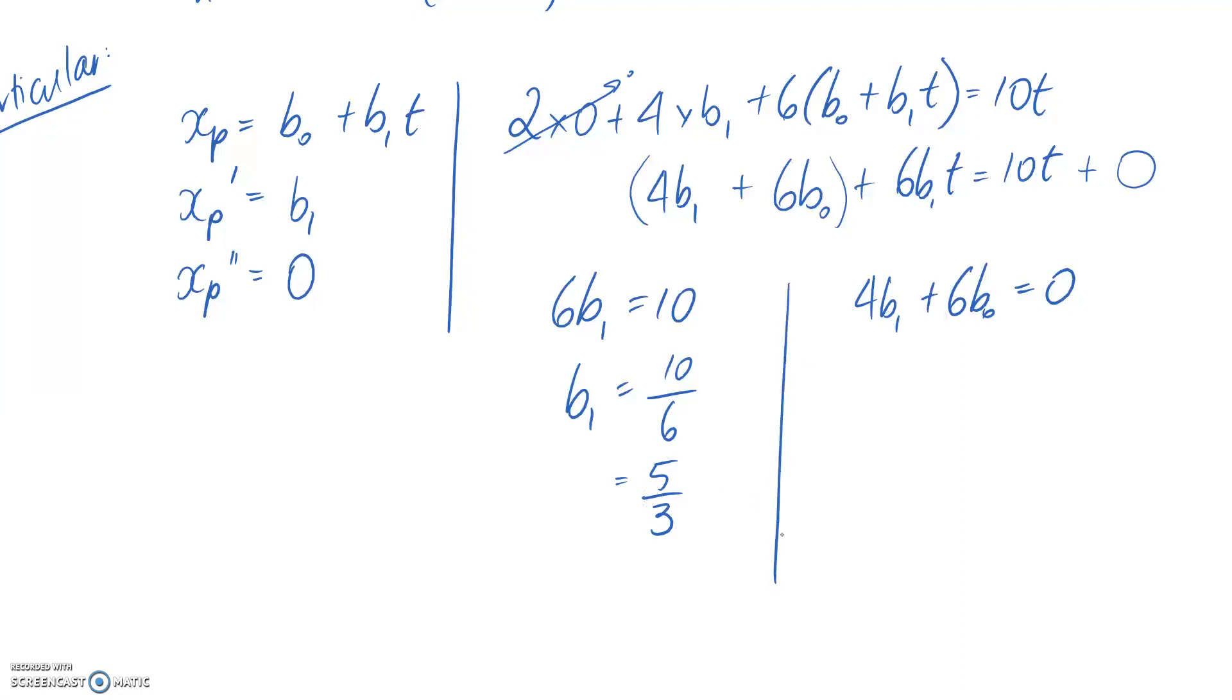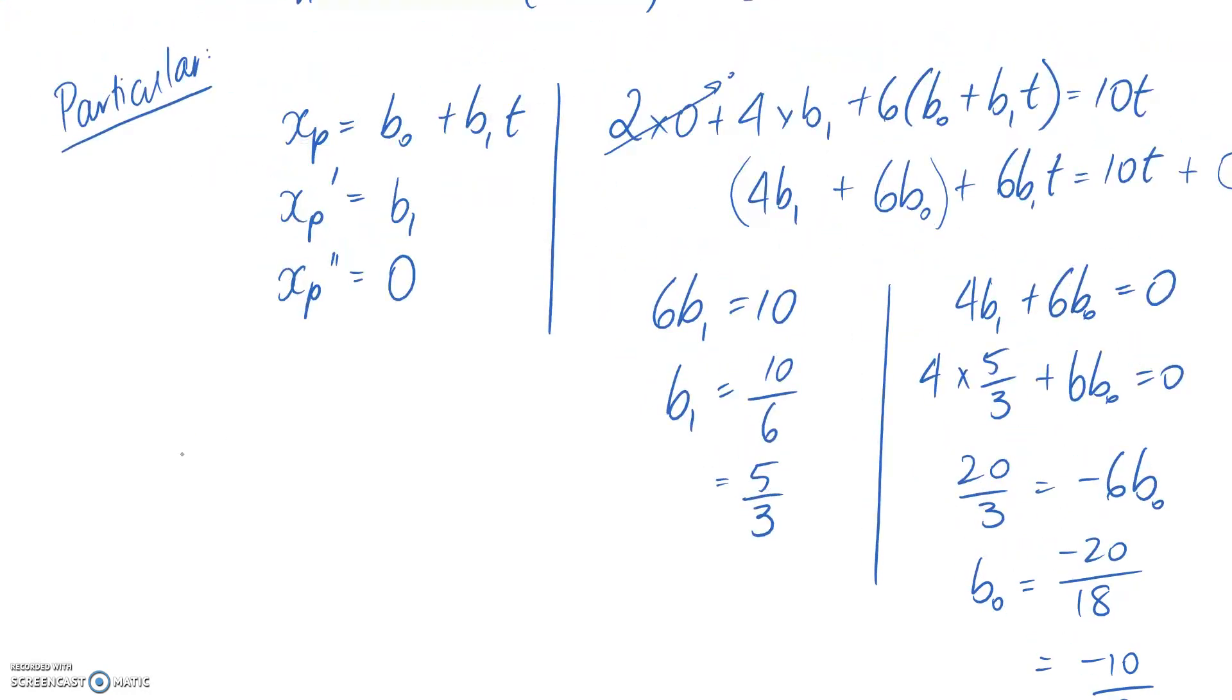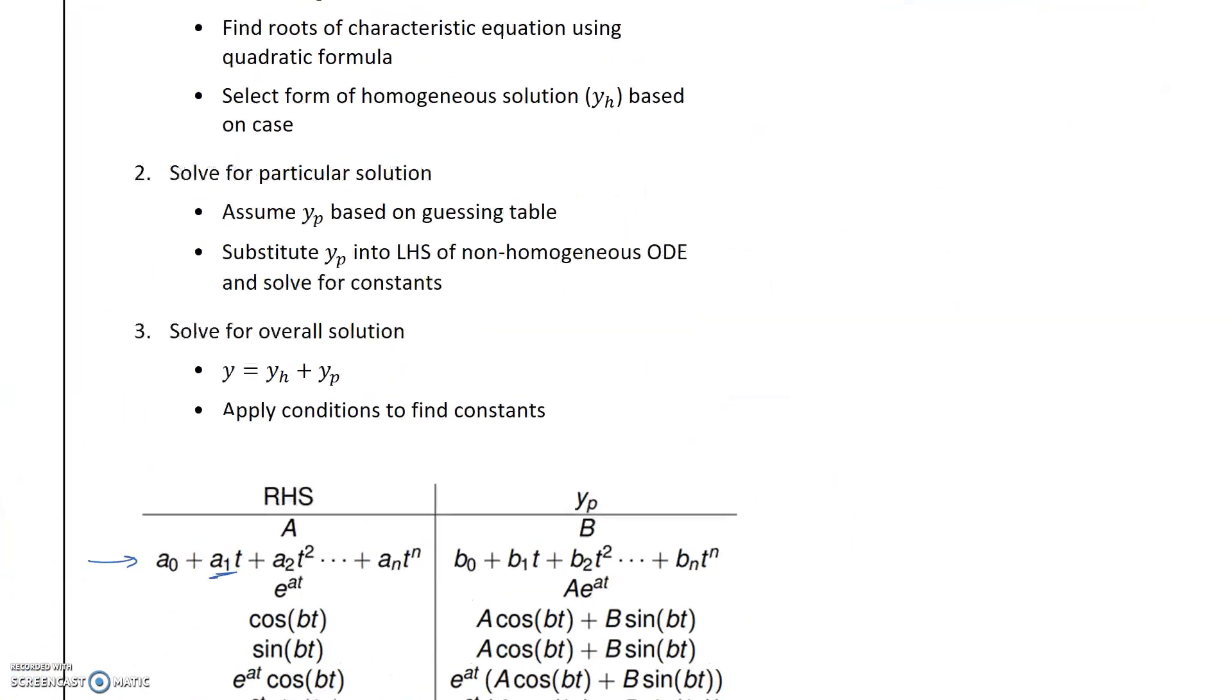And if we now bring that across over into this other equation, so I'm subbing in. This is going to become 20 on 3. And I'll swing this. It's going to be negative 6b0. So b0, if I divide by the negative 6, it's going to become negative 20 on 18. Or again, we can write that a bit nicer as negative 10 divided by 9. So we now know these two constants, which means we can sub it back into our xp equation. So b0 came to negative 9 on 10, and b1 came to 5 on 3t. So we're now done that second step in our process.